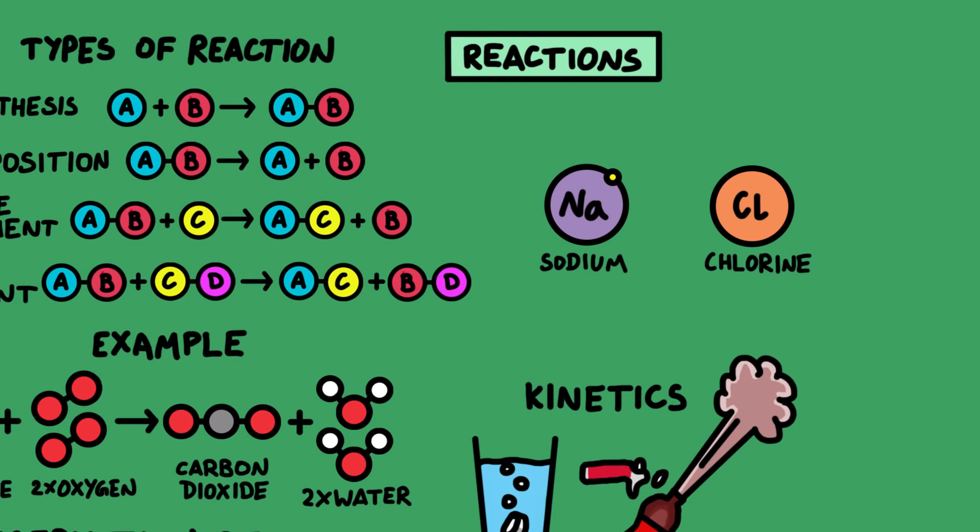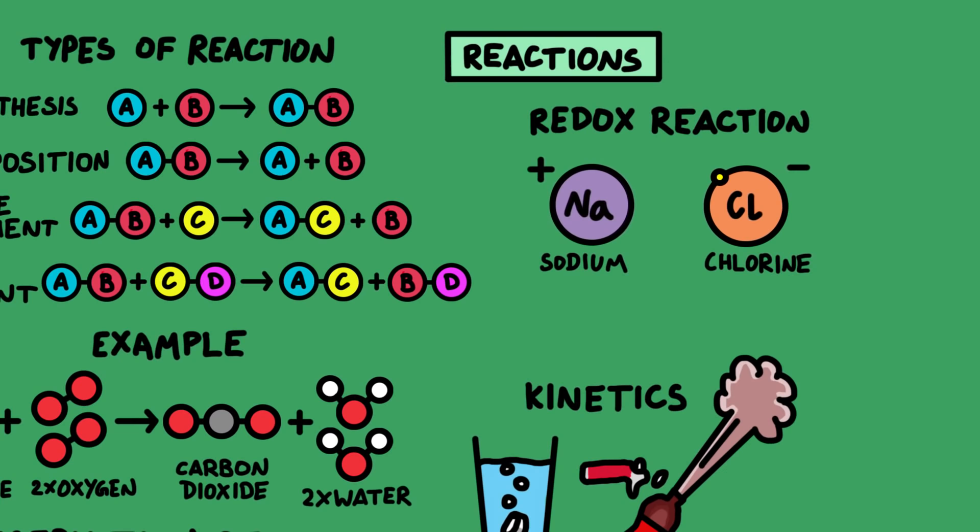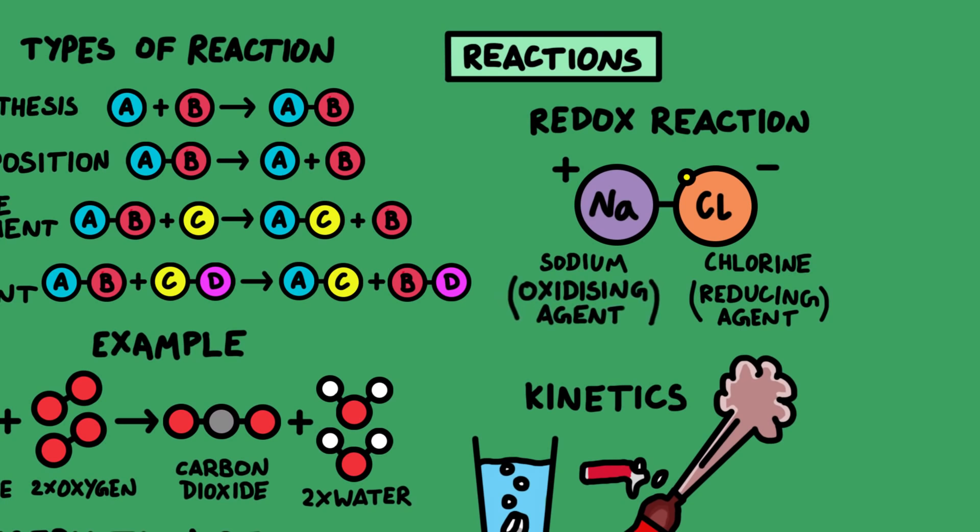Oxidation means a loss of electrons from a substance, and a reduction means the gain of electrons, and they have to happen together. An example is sodium and chlorine. Chlorine is the reducing agent and sodium is the oxidizing agent.